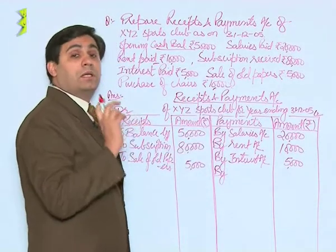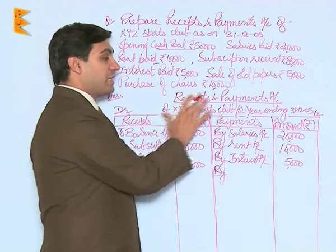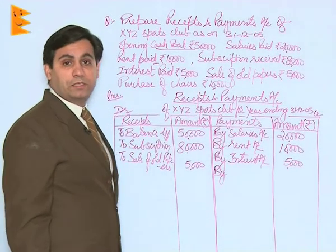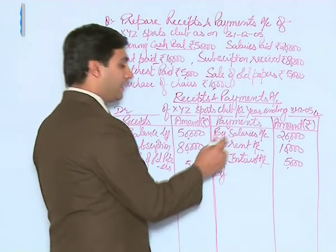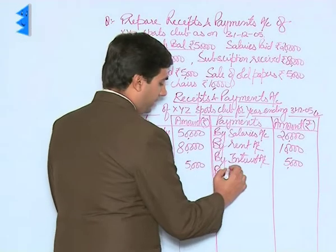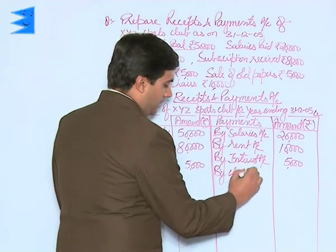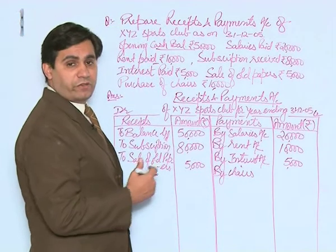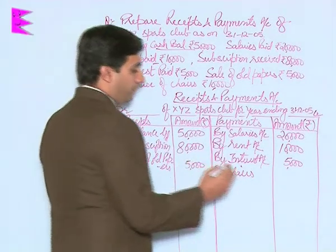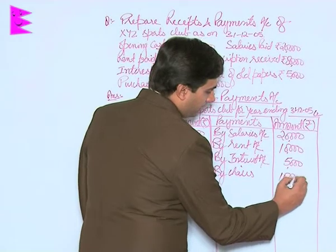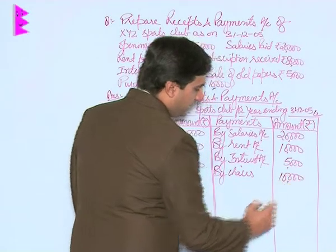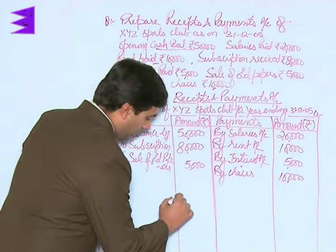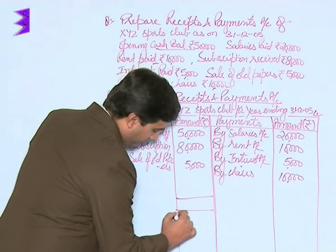Then we have purchase of chairs. Although it is a capital item involving furniture, in the receipts and payments account there is no distinction between capital and revenue items. So it will be taken as a payment — 'by chairs', or you can also write it as 'purchase of furniture' — 10,000.